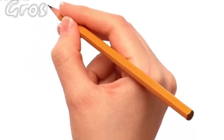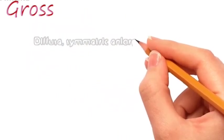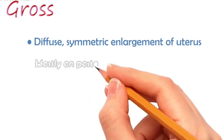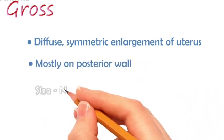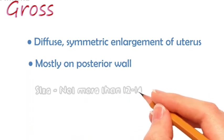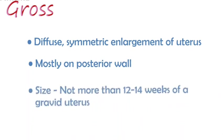Looking at the gross features, there is diffuse symmetric enlargement of the uterus, which is seen mostly on the posterior wall, and the size is usually not more than 12 to 14 weeks of a gravid uterus.